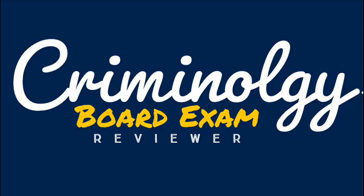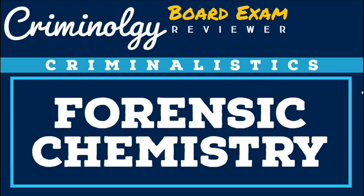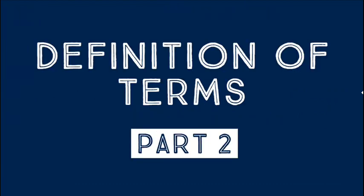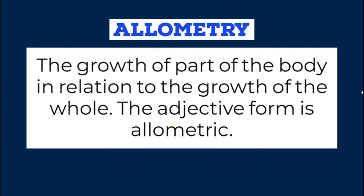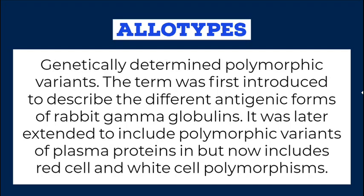Criminology Board Exam Reviewer: Forensic Chemistry — Definition of Terms, Part 2. Allometry: The growth of part of the body in relation to the growth of the whole. The adjective form is allometric. Allotypes: